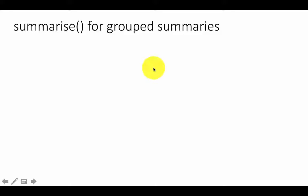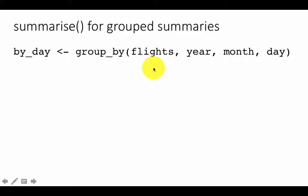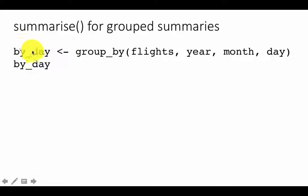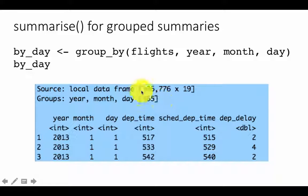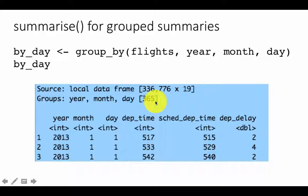Let us now apply this knowledge to the NYC flights database. We are taking the flights data and grouping it first by year, month, and day — which means for every possible combination of year, month, and day, we create a group and then do summarization. The resulting table 'by_day' shows 365 distinct groups, which is what we expect, since even though there were 336,000 rows, all the data was from one single year and covers every day of the year.